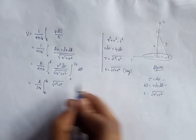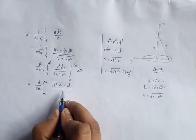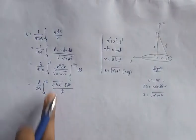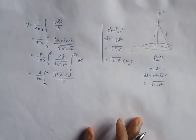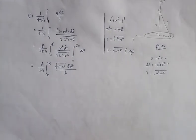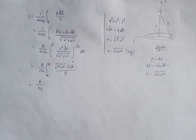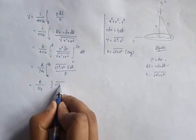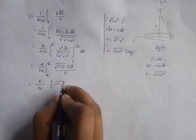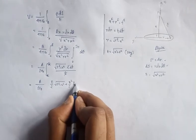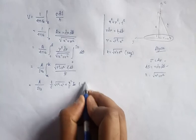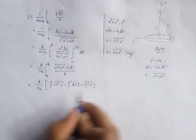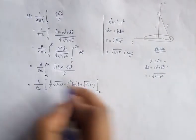After substitution, the integrand becomes (t-squared minus x-squared) times t dt divided by t. The t cancels, leaving the integral of root over (t-squared minus x-squared) from x to k. This standard integral evaluates to: (t over 2) times root(t-squared minus x-squared) plus (x-squared over 2) times ln of (t plus root(t-squared minus x-squared)), evaluated from x to k.